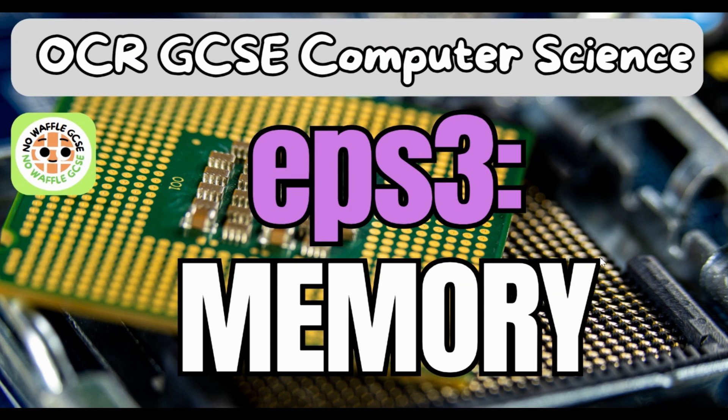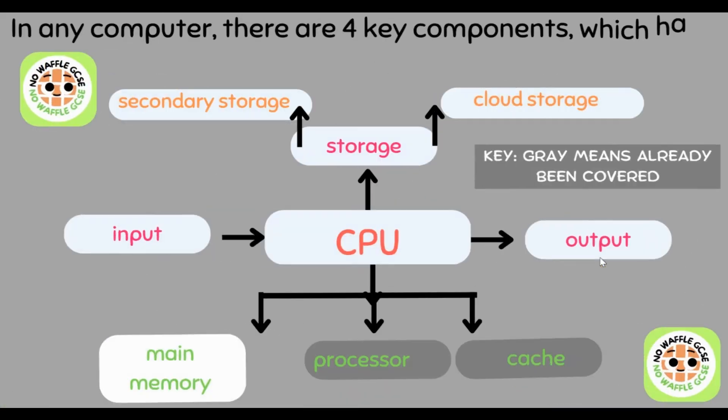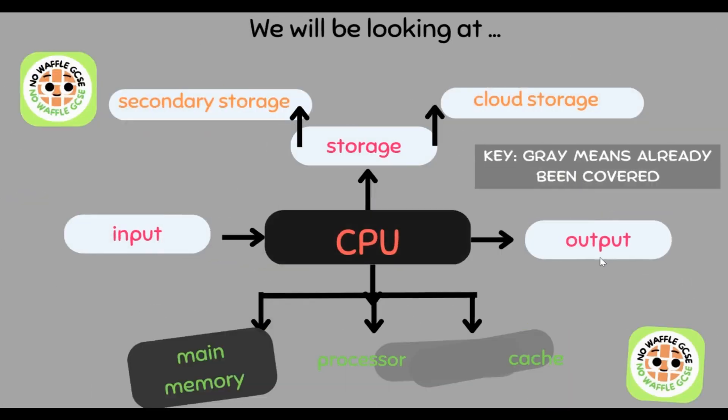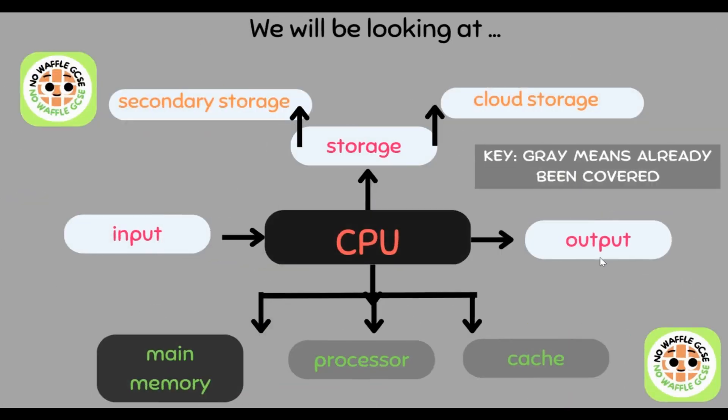OCR GCSE Computer Science, episode 3: memory. In any computer system there are four key components: inputs, outputs, the CPU, and storage. In a previous video we've already covered the processor and the cache, and in this video we will be looking at the main memory.